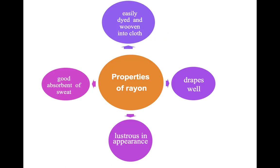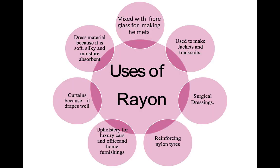Properties of rayon: it can be easily dyed and woven into cloth, it drapes well, it is lustrous in appearance, and it is a good absorbent of sweat. Uses of rayon include: mixed with fiberglass for making helmets, jackets and tracksuits, surgical dressings, reinforcing nylon tires, upholstery for luxury cars and home furnishings, curtains (because it drapes well), and dress material (because it is soft, silky, and moisture absorbent).